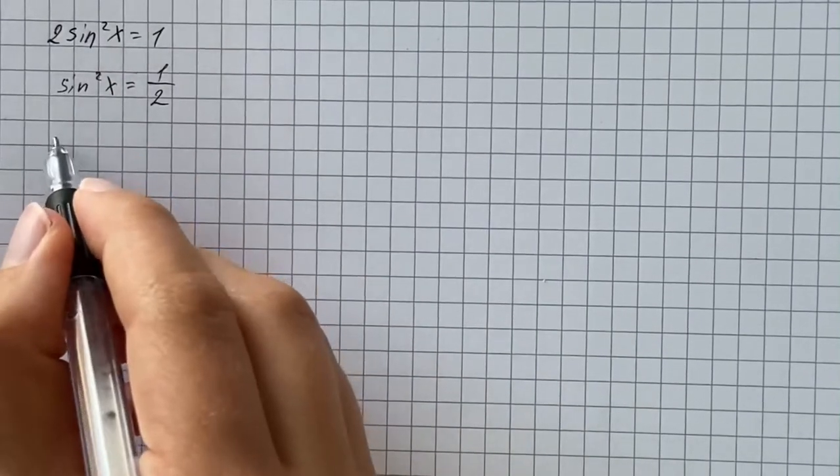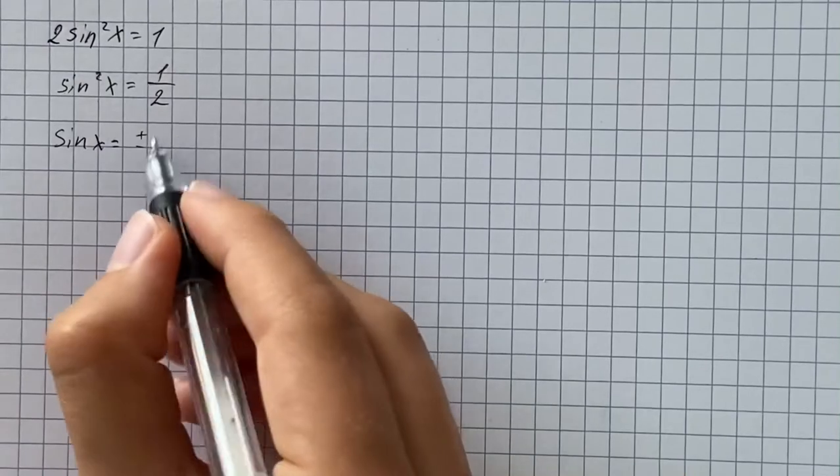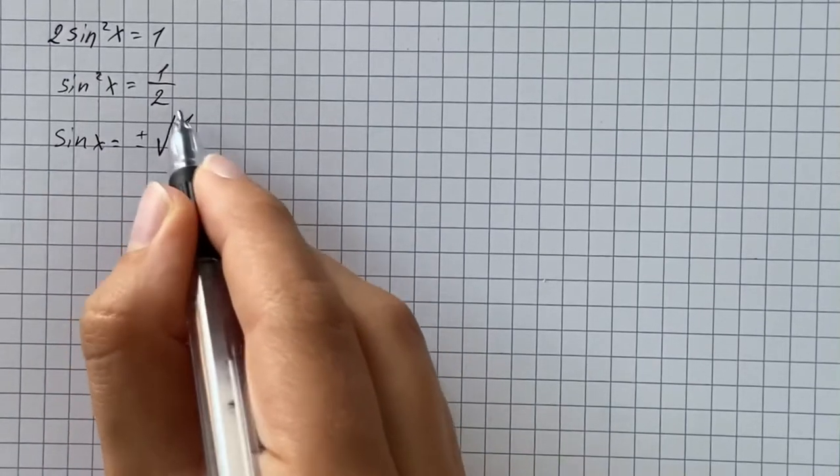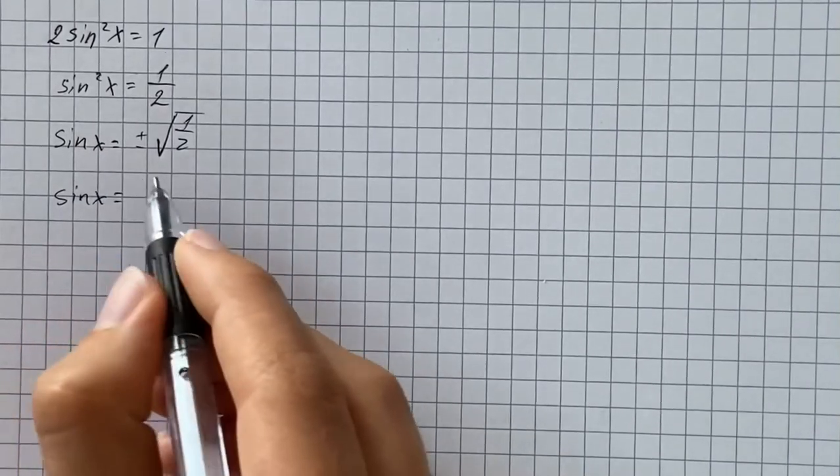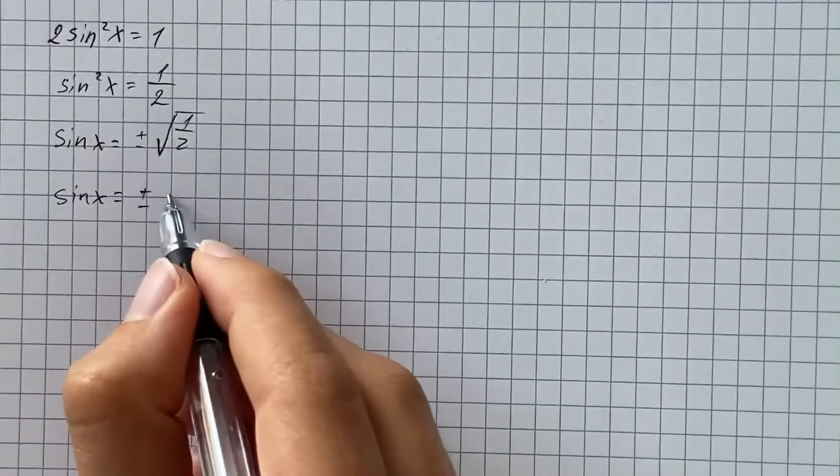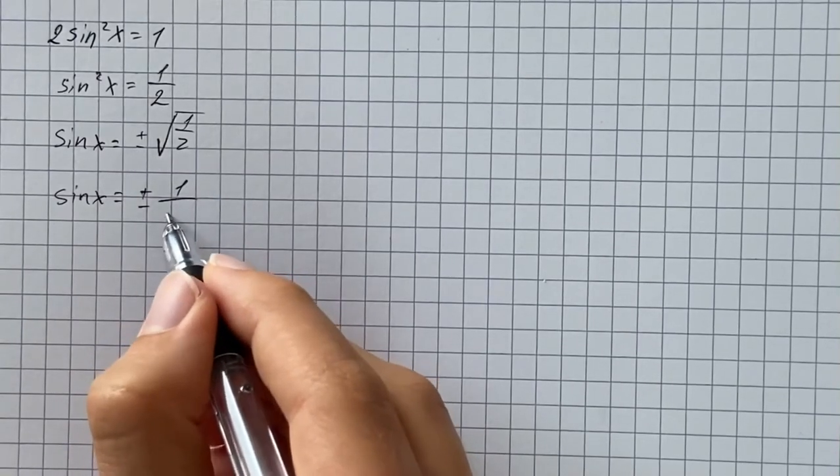Then we're going to take the square root, and we get sine of x equals positive or negative square root of 1 half, and we're going to simplify it. So we take the square root of the numerator and we get just 1, and then over square root of 2.